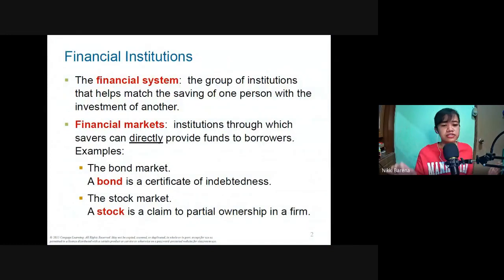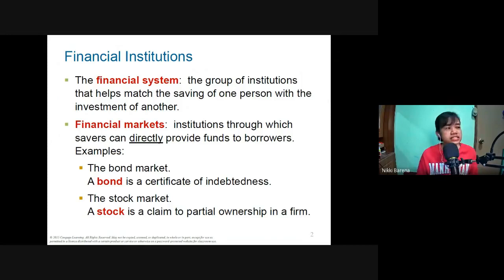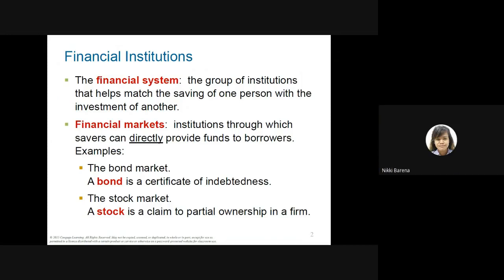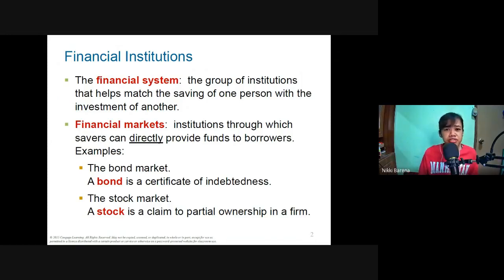Before we start, imagine you've just recently got your license to practice as an accountant — you're now a CPA — and you decided to put up an accounting firm. Aside from the office, you need office desks, chairs, file cabinets, and most importantly computers. These form part of your capital.